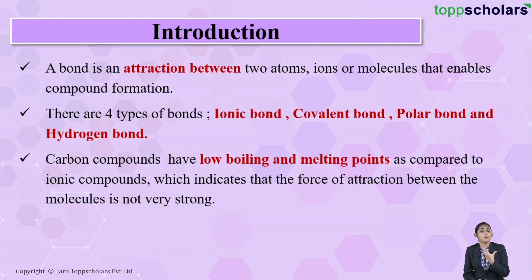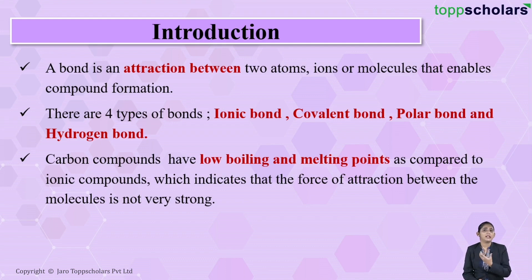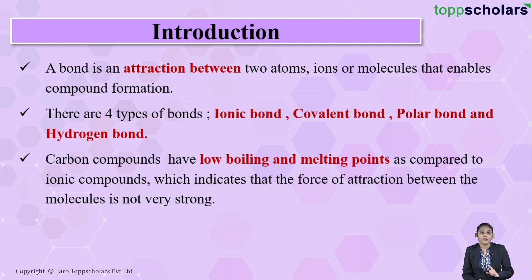This is because of the force of attraction. In ionic compounds, the force of attraction between the oppositely charged ions is very strong, so you need more energy to break it, giving ionic compounds high melting and boiling points. In carbon compounds, the force of attraction between the molecules is not very strong.